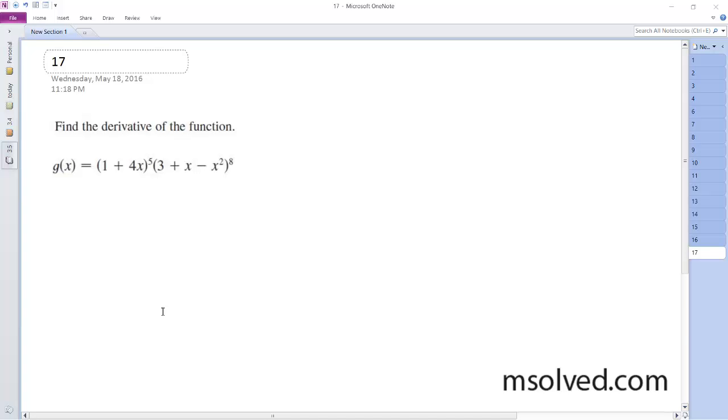So this problem involves both the chain rule and the product rule. So g prime of x is going to be equal to,